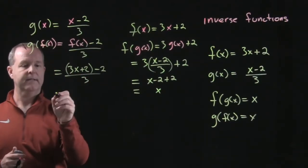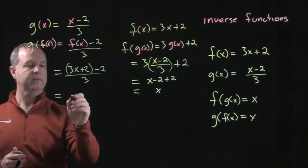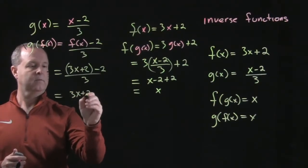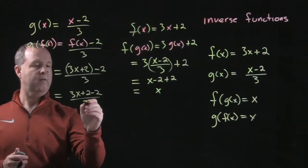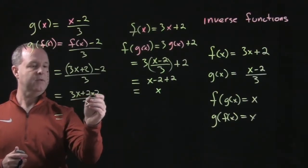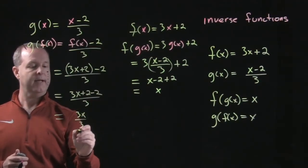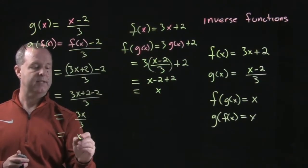Let's simplify that. 3x plus 2 minus 2 all over 3. The 2's factor out. So I have 3x over 3, and that equals just x.